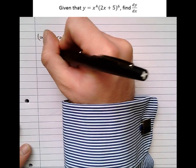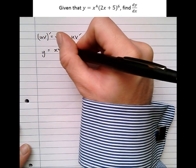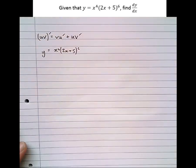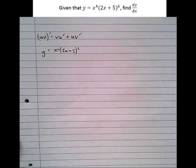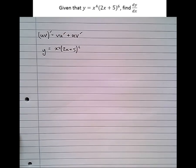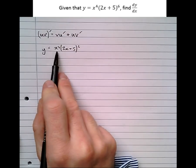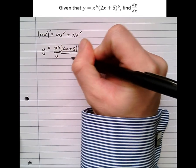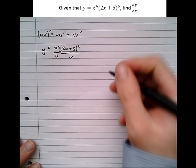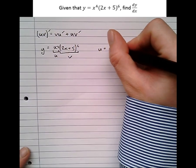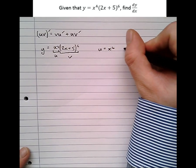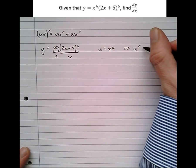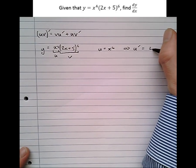Let's have a look at what that means in the context of this question. We've got a function y equals x to the power of 4 times (2x plus 5) to the power of 6. We can see that that's a product of two functions, therefore the product rule applies. x to the 4 is the first function, we're going to call that u. So u equals x to the power of 4, which means that u dash, the differential of that, is 4x cubed.